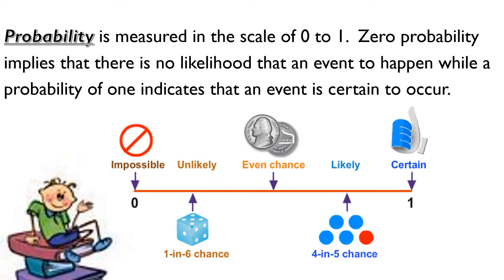Now, flashed on the screen is a probability line. So, the probability is measured in the scale of 0 to 1. When we say 0, meaning to say, it's impossible that it will happen. Never will it happen. And, the certain or 1, it means it is a hundred percent sure that it will happen.